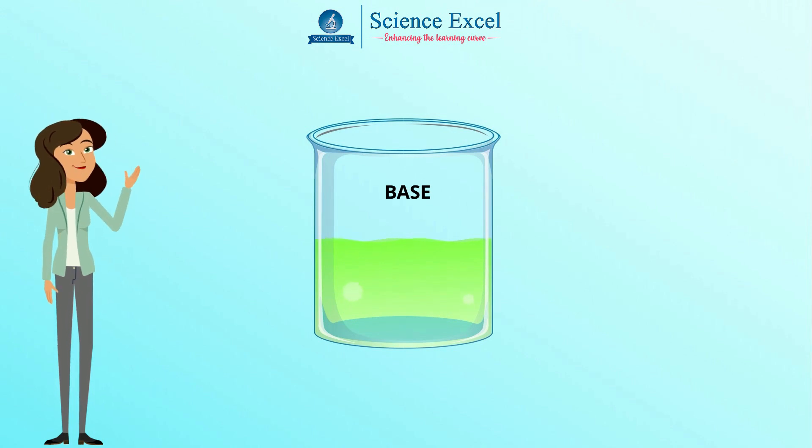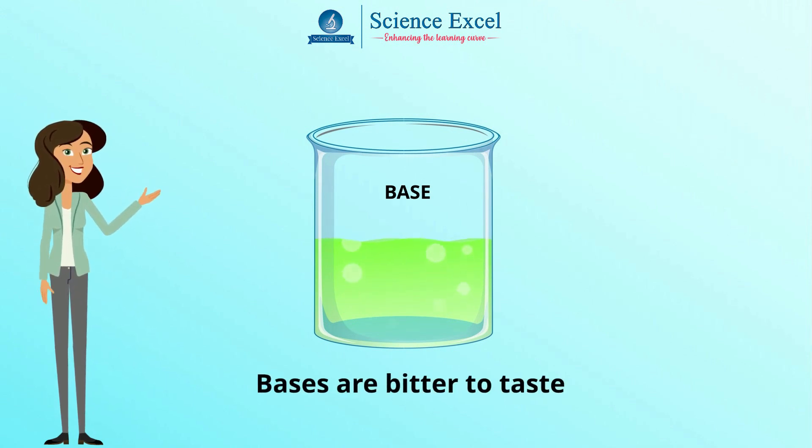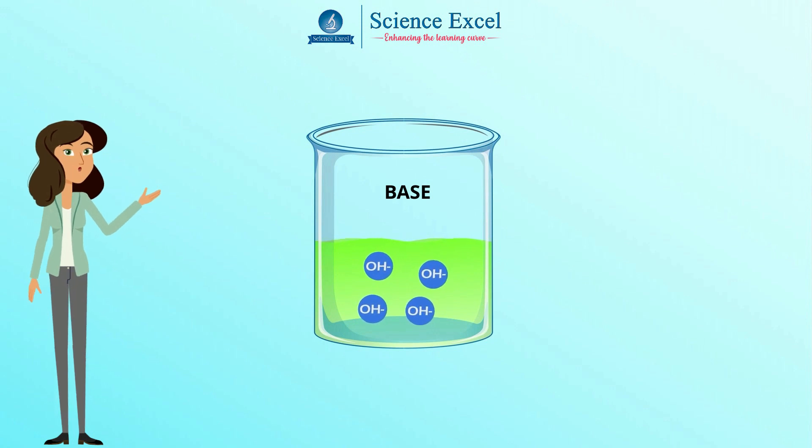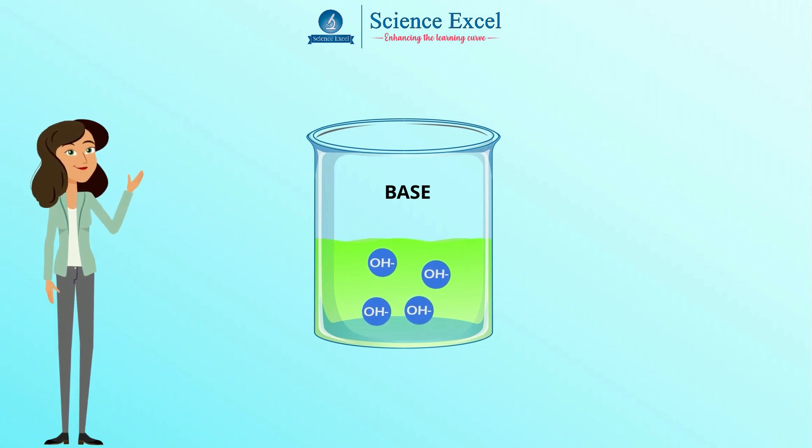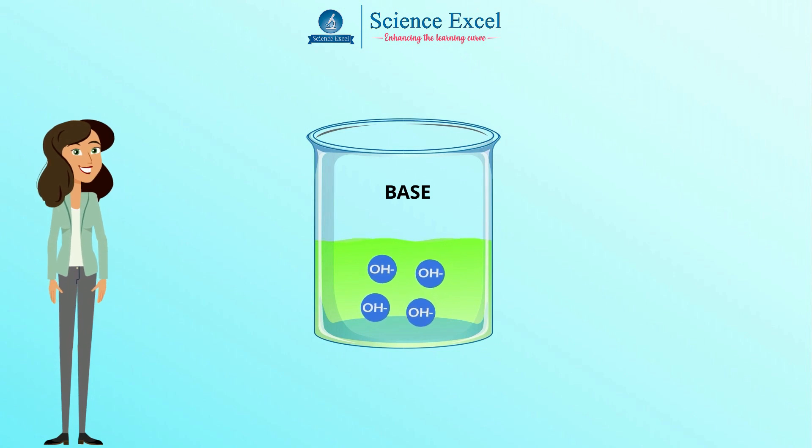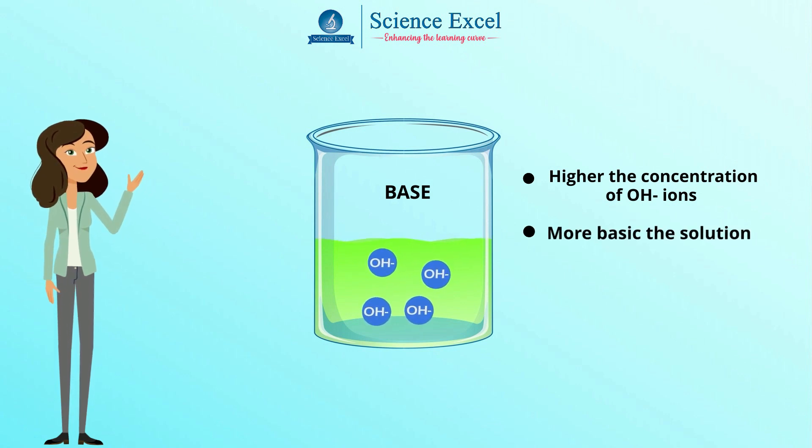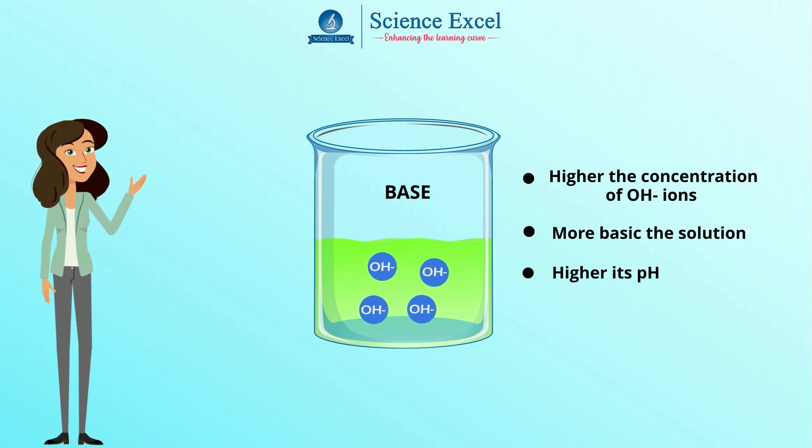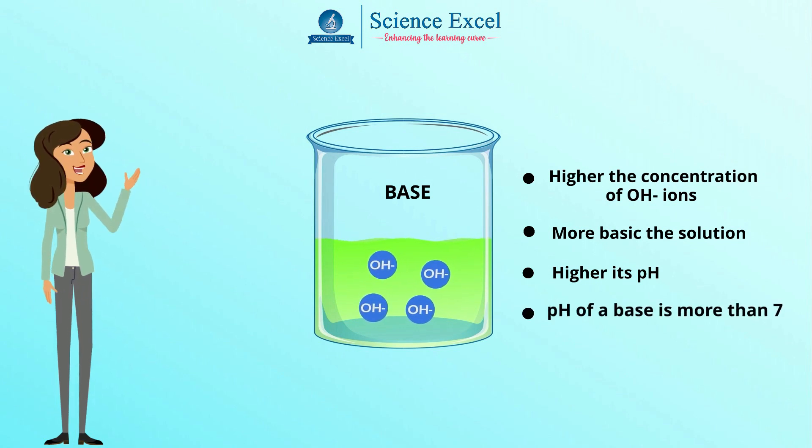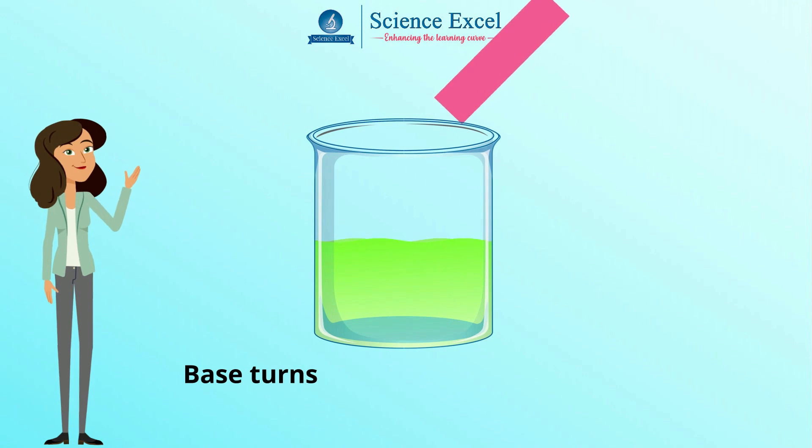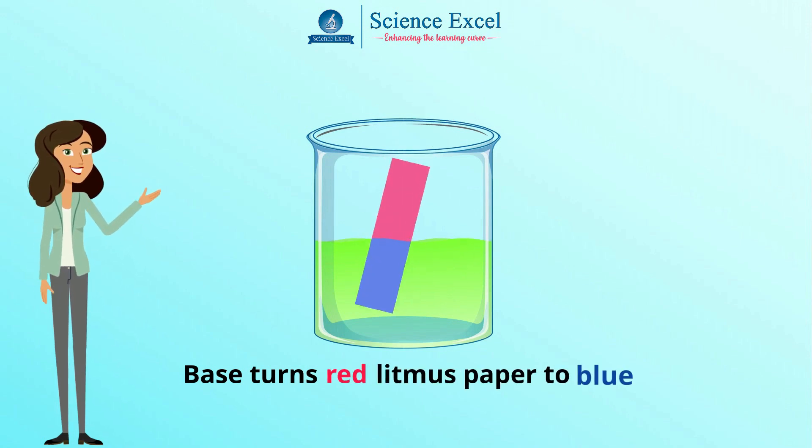The most common characteristic of a base is their bitter taste and a soapy feel. A base is a substance which yields a hydroxide ion when it is dissolved in water. The higher the concentration of hydroxide ions, the more basic the solution and higher its pH. The pH of bases is more than 7. Bases turn the color of red litmus paper to blue.